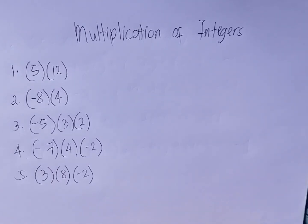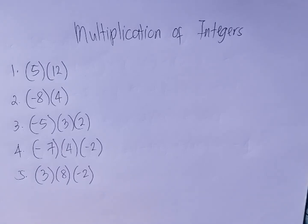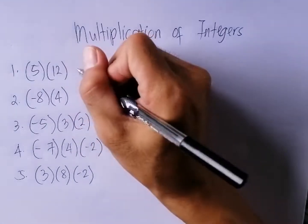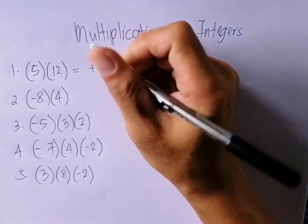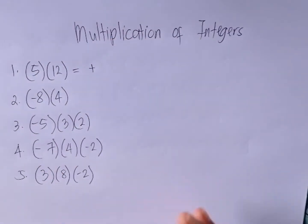Multiplication of integers. Find the product of the following. Number one: positive five times positive twelve. Positive times positive is equal to positive, then five times twelve is sixty.